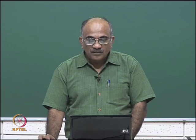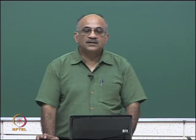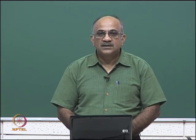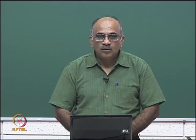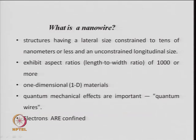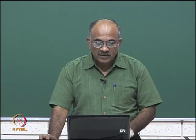In a nanowire, because of size restriction along two axes, electrons are confined in those two axes — they cannot move beyond a certain distance in those two directions, and are only allowed to move along the longitudinal side. In a typical nanowire, electrons are allowed to move along the length and are constrained in the other two dimensions, bringing about certain quantum mechanical effects in these quantum nanowires.